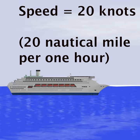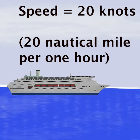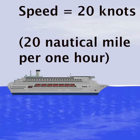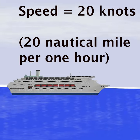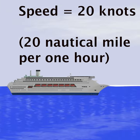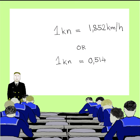When we say our speed is 20 knots, it means we are moving 20 nautical miles per hour. And 1 knot is equal to 1.85 kilometers per hour, or 0.514 meters per second.